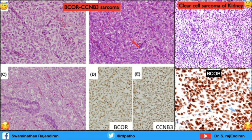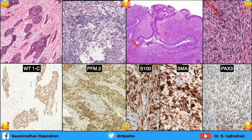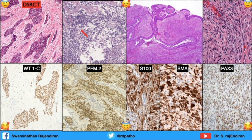This composite picture shows desmoplastic small round cell tumor, which is positive for WT1. This is another small blue cell tumor which is positive for FOXM2, which is very specific for alveolar rhabdomyosarcoma.